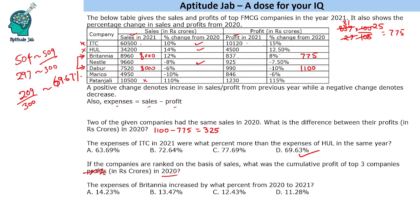The third top company had a 15 percent increase, so its 2020 profit was 8800. The second company had 7.5 percent less profit, clearly giving 1000. HUL had a 12.5 percent increase — one-eighth increase — so its 2020 profit was 4000. Adding these three values: 88 plus 40 is 128, plus another component gives 138. The cumulative profit of the top three companies in 2020 is 13,800 crores.